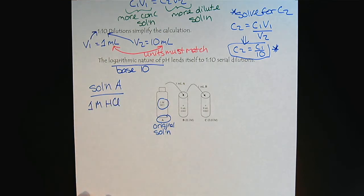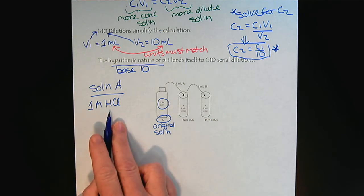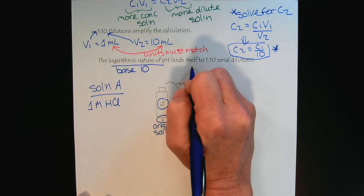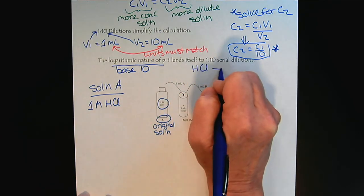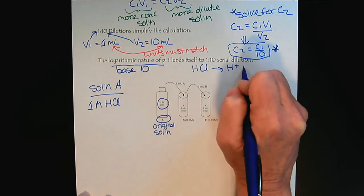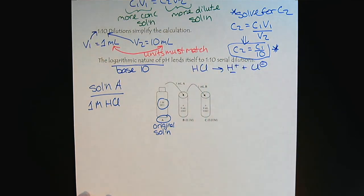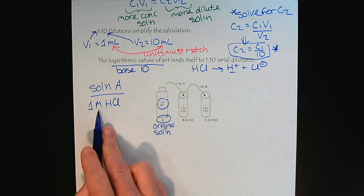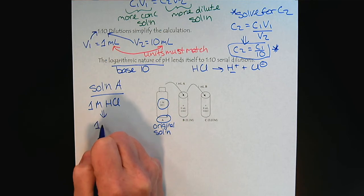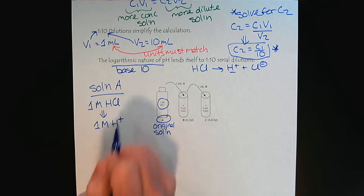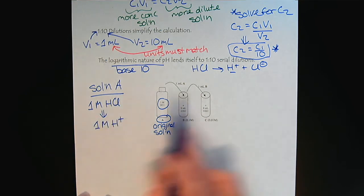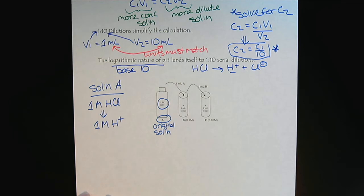And we understand acid-base chemistry. So we know if we have hydrochloric acid, that it's a strong acid, and it fully ionizes to H+. So if we see we have 1 molar HCl, we know that we also have 1 molar H+, because it fully ionizes into the hydronium or the hydrogen ions and the chloride ions.